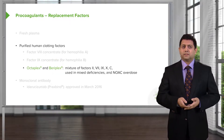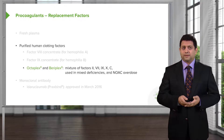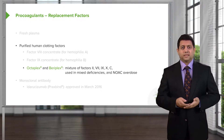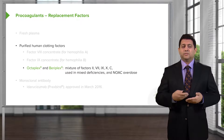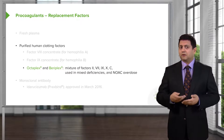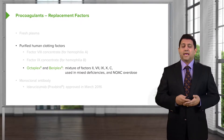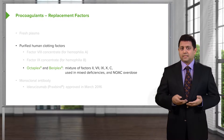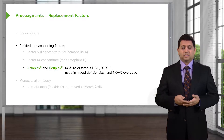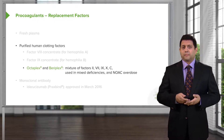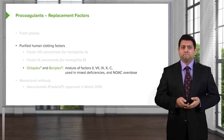Octoplex and Baroplex are a mixture of factors — factors II, VII, IX, X, and protein C. These are used in mixed coagulation deficiencies and in patients who have overdosed on novel anticoagulant drugs like rivaroxaban and apixaban.